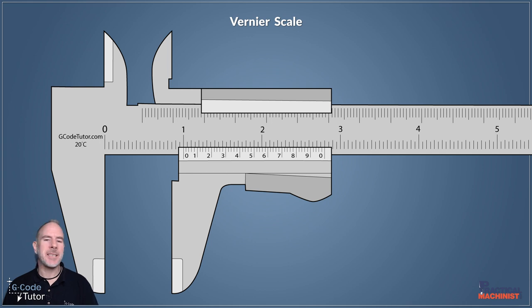To read our Vernier scale, the first thing we need to look at is the zero position on our sliding scale, this bottom scale here. As we can see, this is perfectly lined up with our one inch. So with those two lined up, we know that the Vernier reads exactly one inch because those two lines are perfectly in line with each other. It's almost like it's a solid line going straight through - that tells us exactly what our measurement is.